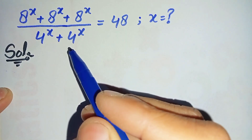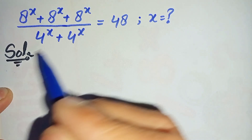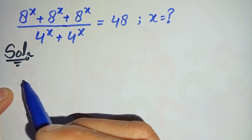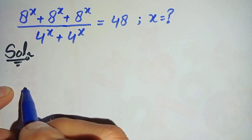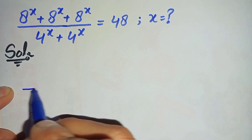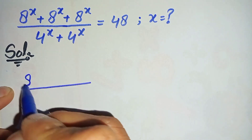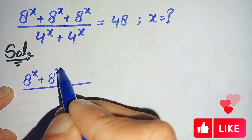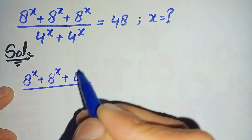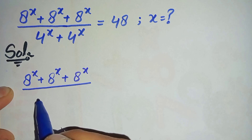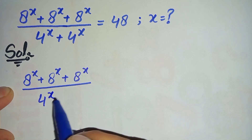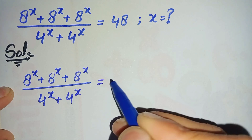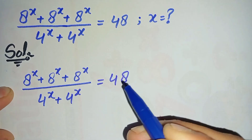To solve this math problem properly, first we will write the solution and then rewrite the question, and try to solve it step by step. So the question is: 8 raised to power x plus 8 raised to power x plus 8 raised to power x, divided by 4^x plus 4^x, is equal to 48.